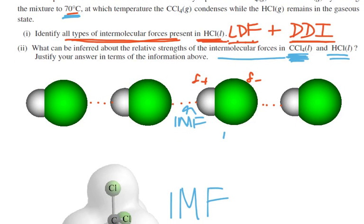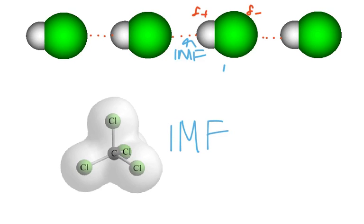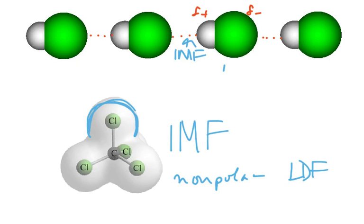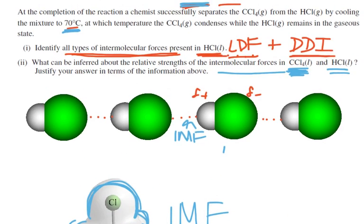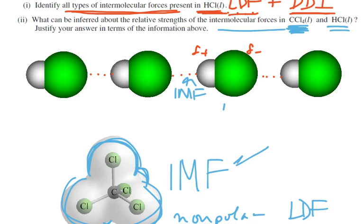CCl₄ intermolecular forces are stronger than those in HCl. Some students had trouble with this because CCl₄ is non-polar and has only London dispersion forces, while HCl also has dipole-dipole forces. In general, dipole-dipoles are stronger than London dispersion forces, but there are exceptions — because of CCl₄'s large electron cloud, it's very polarizable and produces stronger London dispersion forces. We're not asking you to predict that; the data simply shows that CCl₄ condenses while HCl remains gaseous, implying CCl₄ has stronger intermolecular forces.